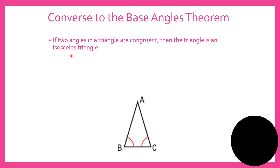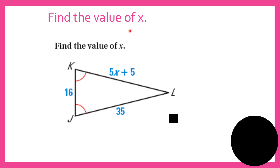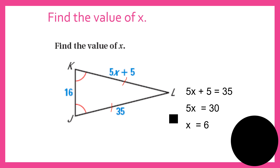The converse of the base angles theorem states: if two angles in a triangle are congruent, then the triangle is isosceles, meaning the two sides are also congruent. For example, solving for x: 5x + 5 = 35, so 5x = 30, divided by 5, x equals 6.